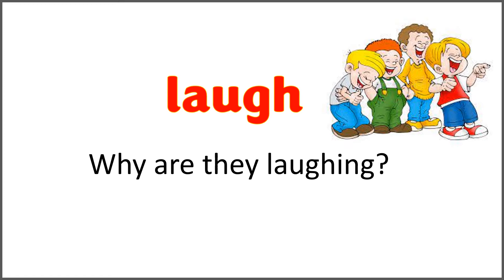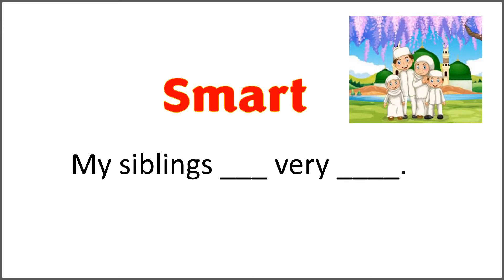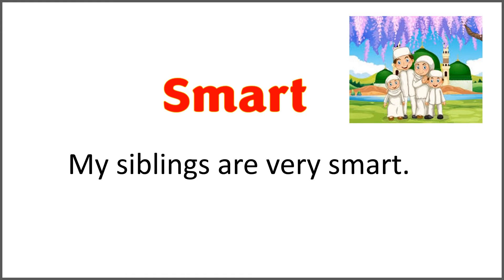If you are still doing this activity, give yourself a pat on the back. You're doing really good. The given word is 'smart' and the sentence is 'my siblings blank very blank.' Use 'are' with the word 'smart' to complete the sentence. You can write the answer in the comment section. My siblings are very smart.